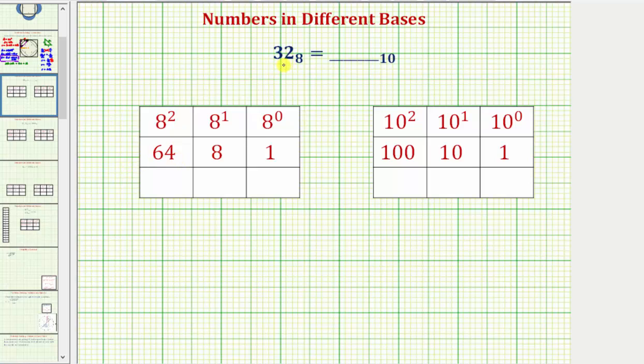Notice that we only have a two-digit number in base eight where the two is in the ones place value and the three is in the eights place value. Which means 32 base eight in base 10 would be equal to three times eight plus two times one.